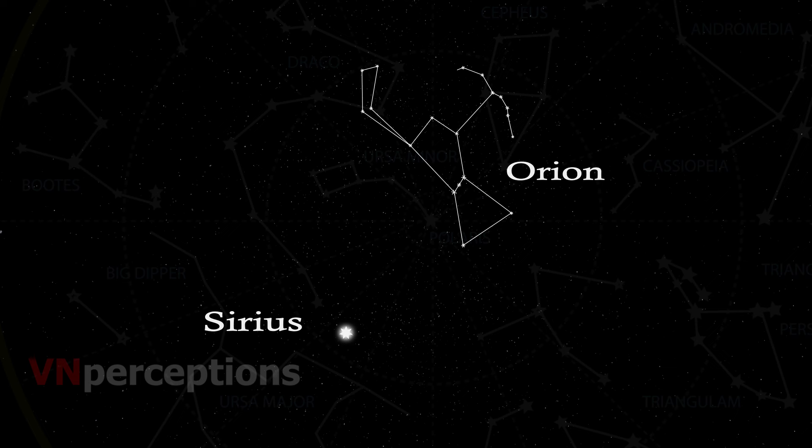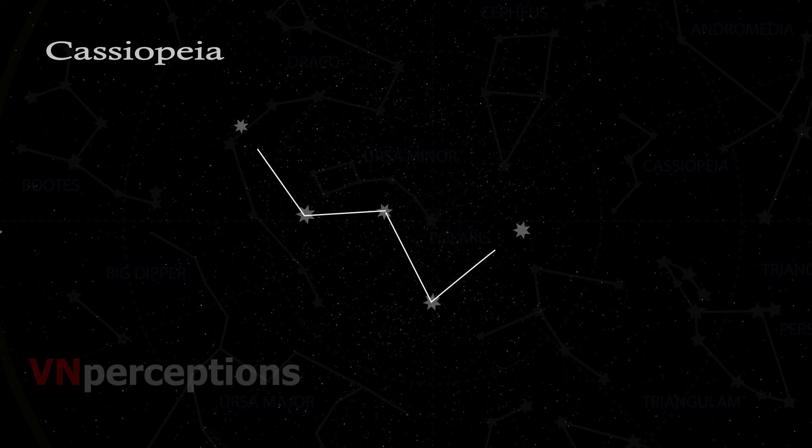To locate Sirius, imagine a straight line passing through the three middle stars of Orion. Look along this line towards the east and this line will lead you to the very bright star and that is the Sirius. Cassiopeia is another prominent constellation in the north sky. It is visible during winter in the early part of the night. It is easily recognizable due to its distinctive W-shape formed by five bright stars.